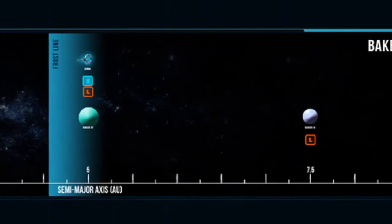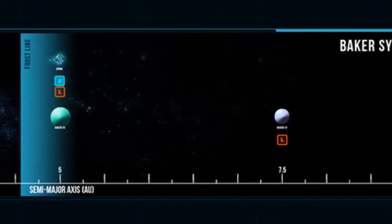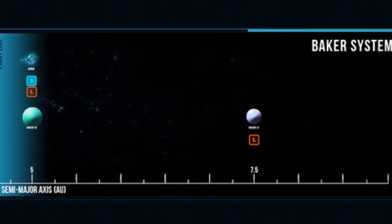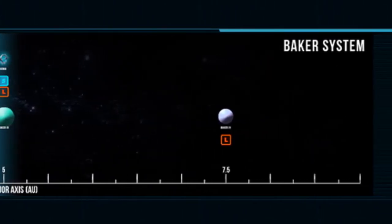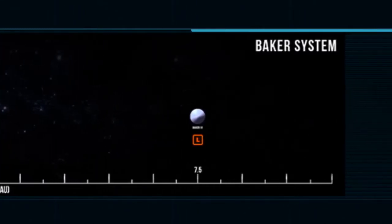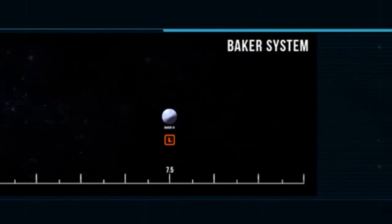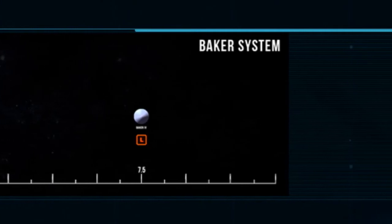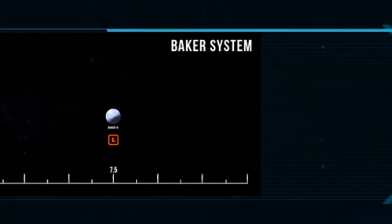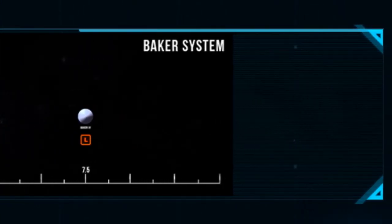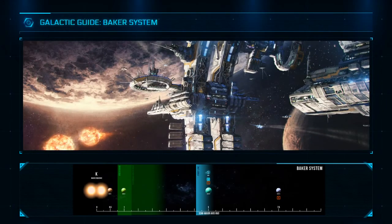The system lies just a single jump from the breadbasket of Terra. The first point has earned the system the attention of a large number of astrophysicists eager to study such a star setup within the confines of safe and patrolled space. The second is the reason for both the system's high point of civilization, the shipping hub, and for its use as an underground racing arena.